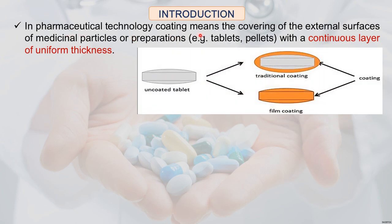In pharmaceutical technology, coating means covering the external surfaces of medicinal particles or preparations — for example tablets and pellets — with a continuous layer of uniform thickness. Coating is just forming a continuous layer of uniform thickness on the external surface of preparations like tablets and pellets.